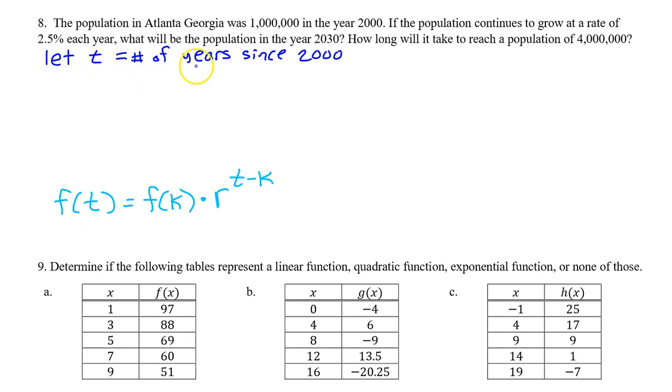If we let t be the number of years since 2000, then the year 2000 itself is year zero. So we are given that f(0) is one million. So that will be our f(k). We can find the common ratio r based on the fact that the population is growing at a rate of 2.5% each year. r will equal 100% plus 2.5%. If the population was decreasing by 2.5%, we would say 100% minus 2.5%.